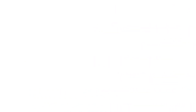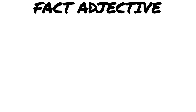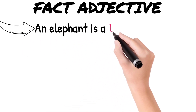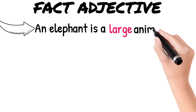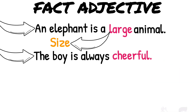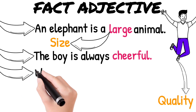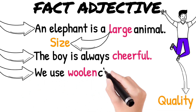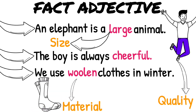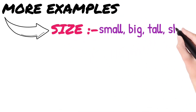Next is fact adjectives. What are fact adjectives? Let us look at some examples. 'An elephant is a large animal' — 'large' indicates size. 'The boy is always cheerful' — 'cheerful' indicates quality. 'We use woolen clothes in winter' — 'woolen' is a material. So all of these are fact adjectives. More examples of fact adjectives by category — Size: small, big, tall, short.